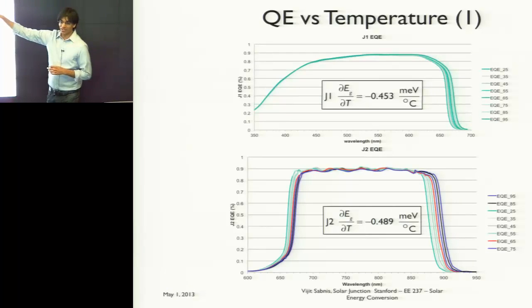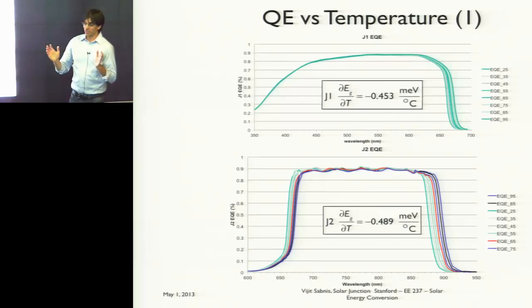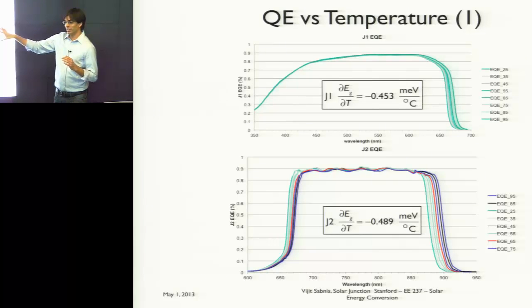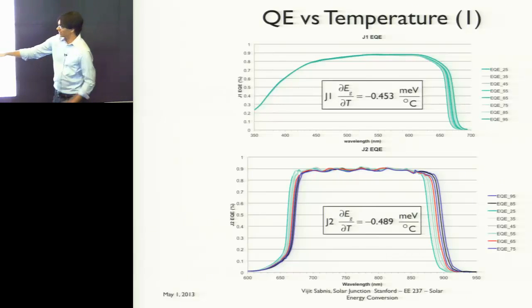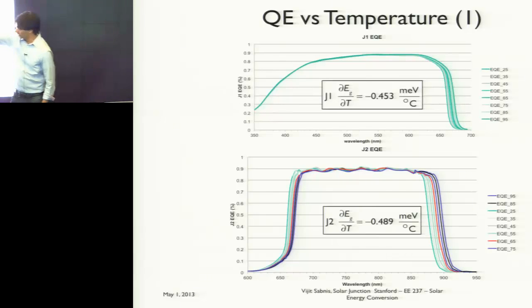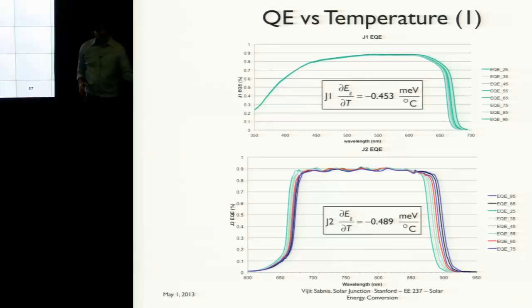One of the interesting things is your top junction doesn't have another material on top of it, so with increasing temperature it absorbs more and more light. Every junction underneath — the second, third, fourth, and fifth — has its band gap increase, so it's able to absorb more light near its band gap. But the low-wavelength side of its quantum efficiency actually shifts to the right, so it's absorbing less light there.